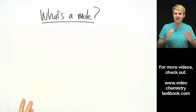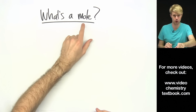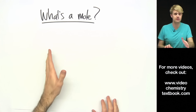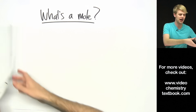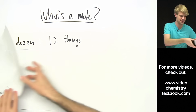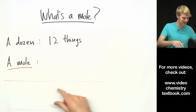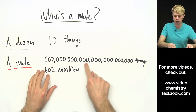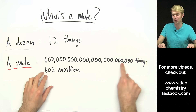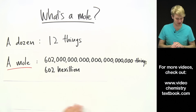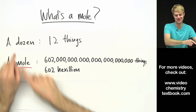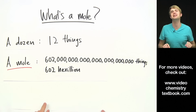So what's a mole? I'm not talking about the cute little furry creatures that live underground. I'm talking about the kind of moles that are super important in chemistry. A mole is a name for a specific number of things — kind of like a dozen. A dozen is the name for 12 things. Now a mole is like this but way bigger. In a mole there are 602 hexillion things — that's 602 followed by 21 zeros.